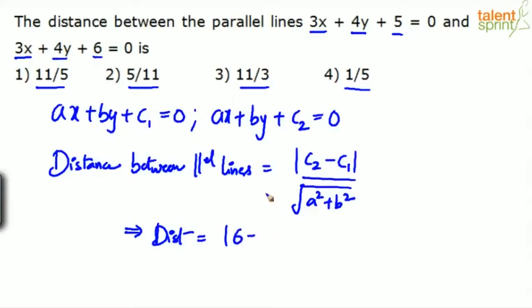So 6 minus c1 is 5 divided by root over a squared plus b squared. What is a? 3, the coefficient of x. What is b? 4, the coefficient of y. So 3 squared plus 4 squared. This will give you 1 divided by root 25. Under root 25 is 5. So 1 by 5 units. Option 4 is the correct answer.